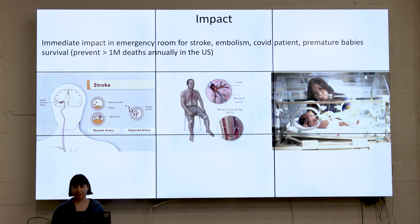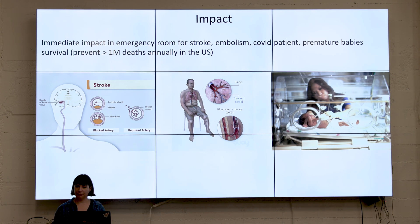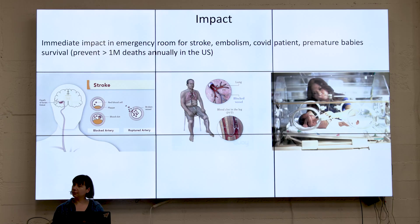In terms of impact: blood clots can be good or bad, but about 200,000 people die every year in this country alone from reasons related to blood clotting — including stroke and pulmonary embolism. When you have a premature baby, they can die because they're placed on a heart-lung machine, and a lot of blood clotting happens there. So we can save a lot of lives.